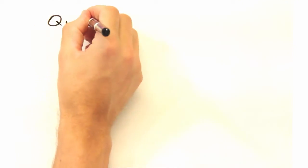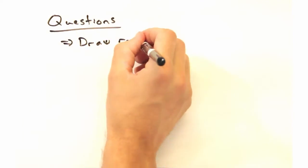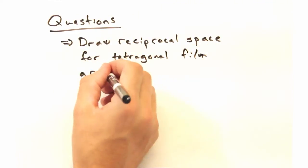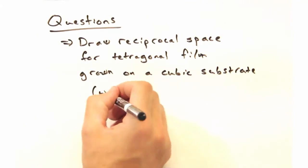Before we head out, if you'd like more practice with superposition of reciprocal lattices, draw what the reciprocal space would look like for a trigonal thin film grown on a cubic substrate.